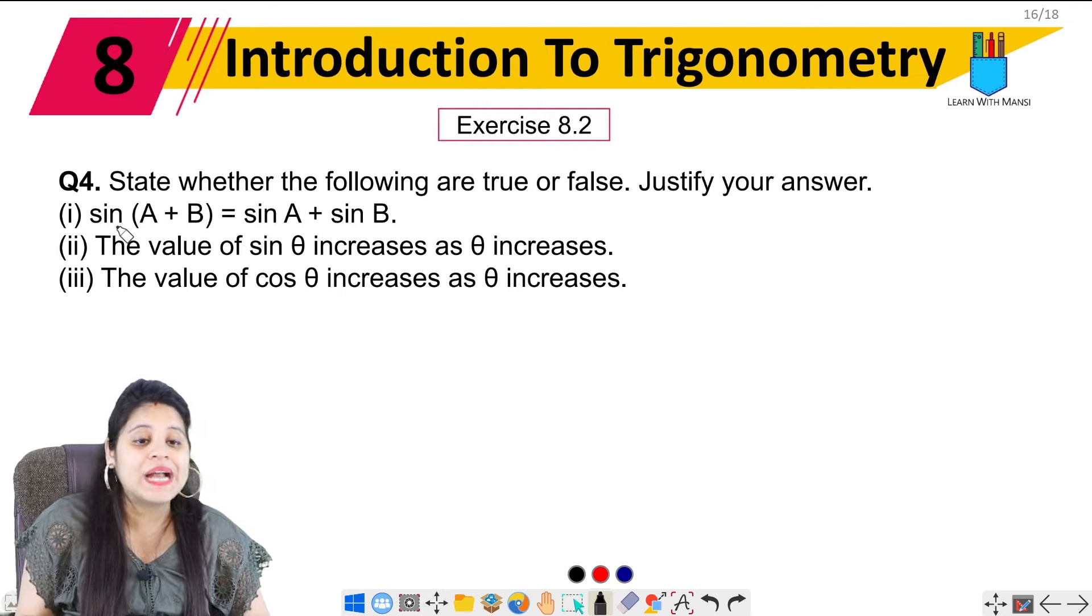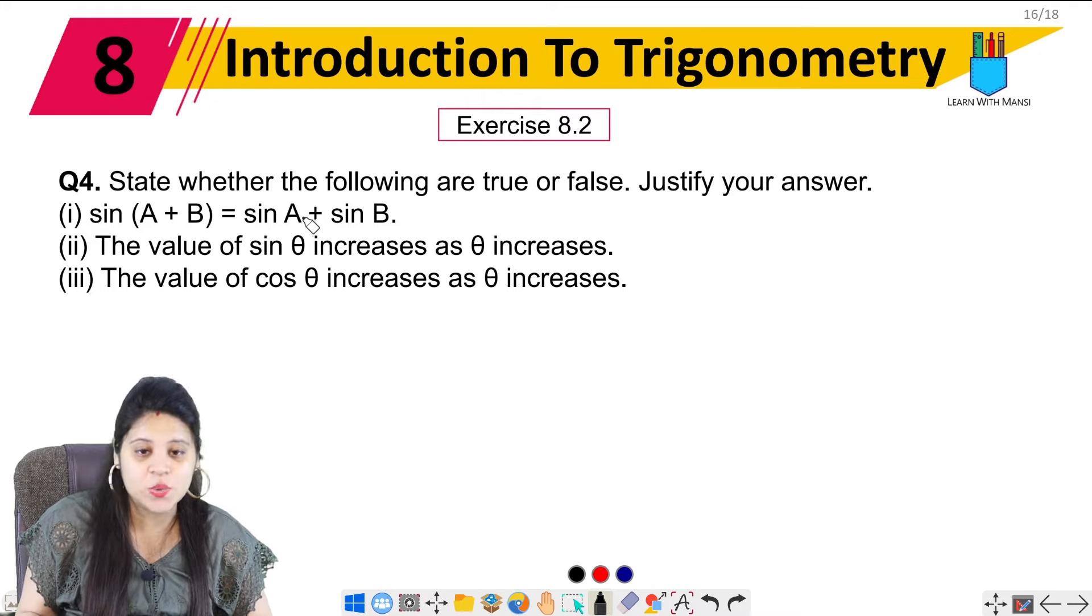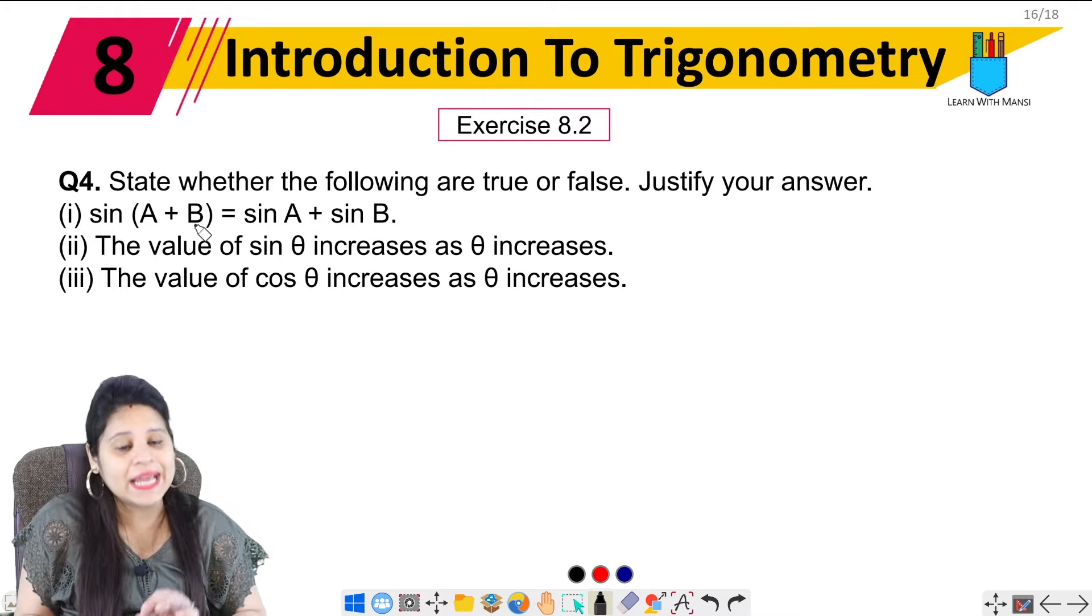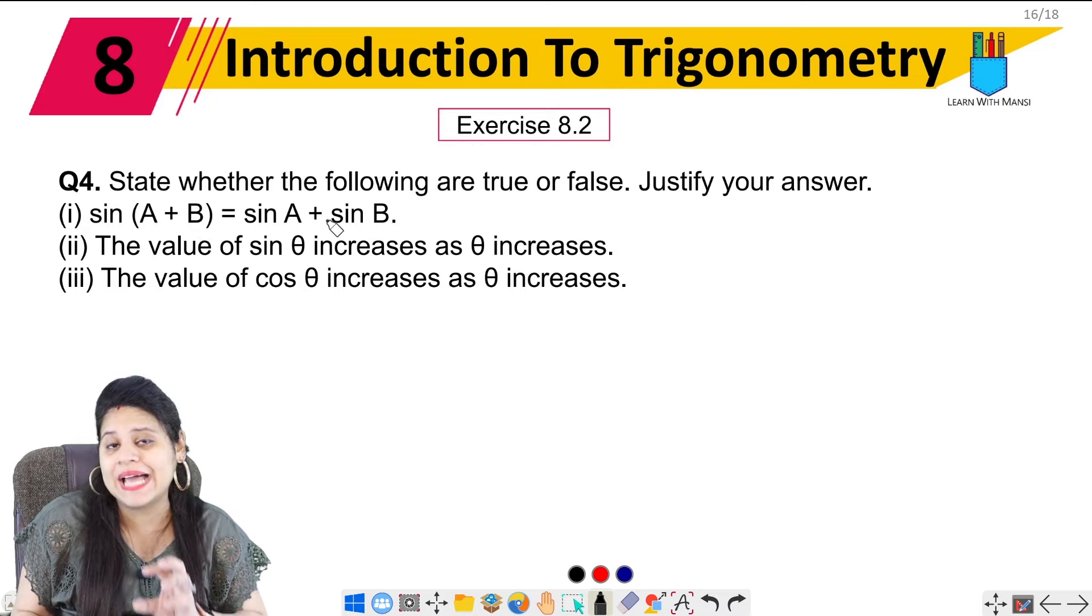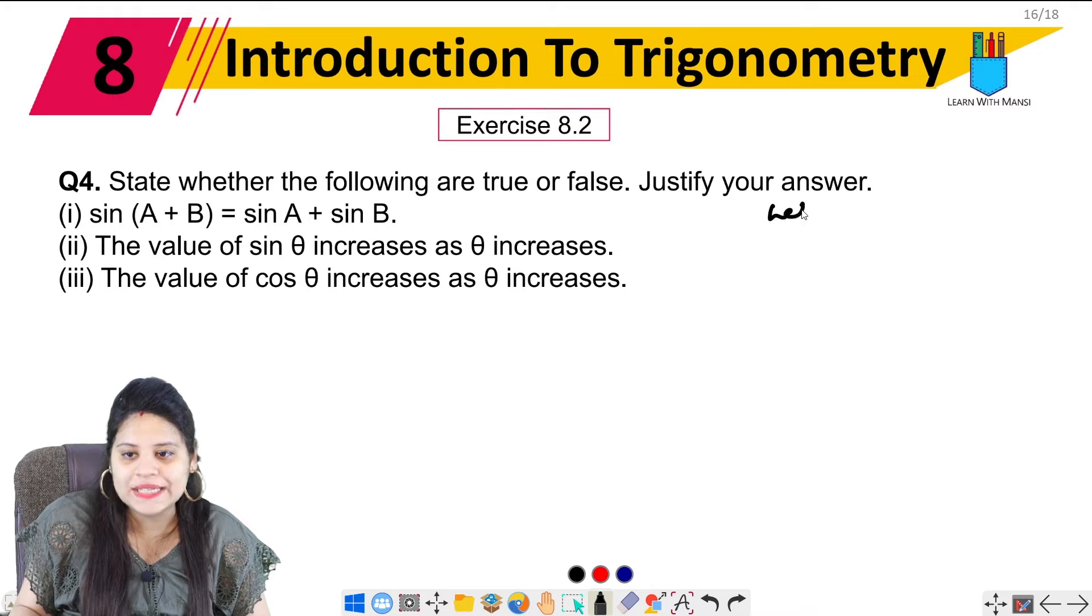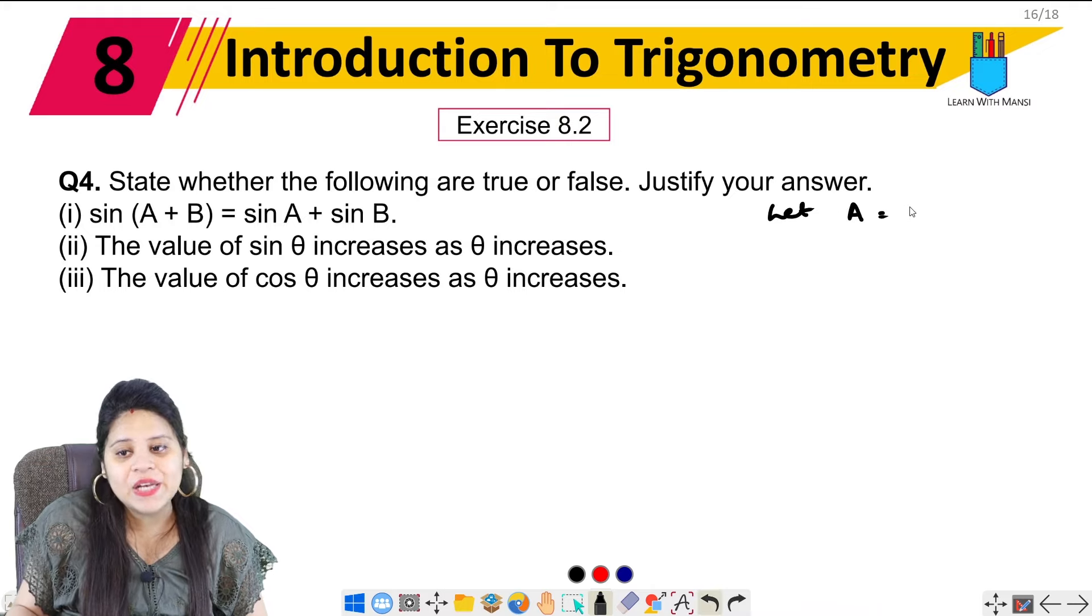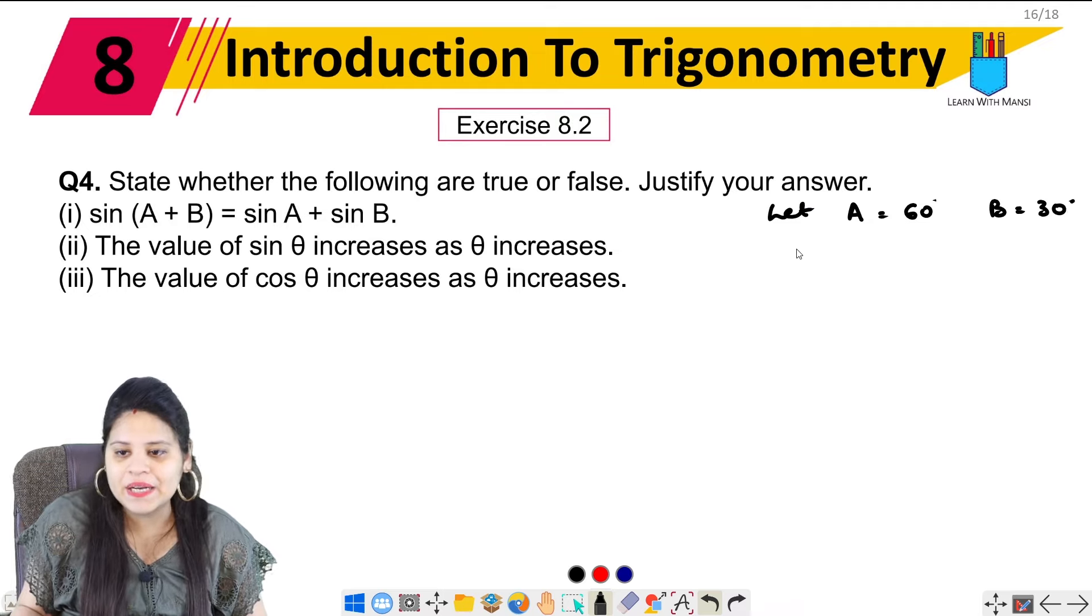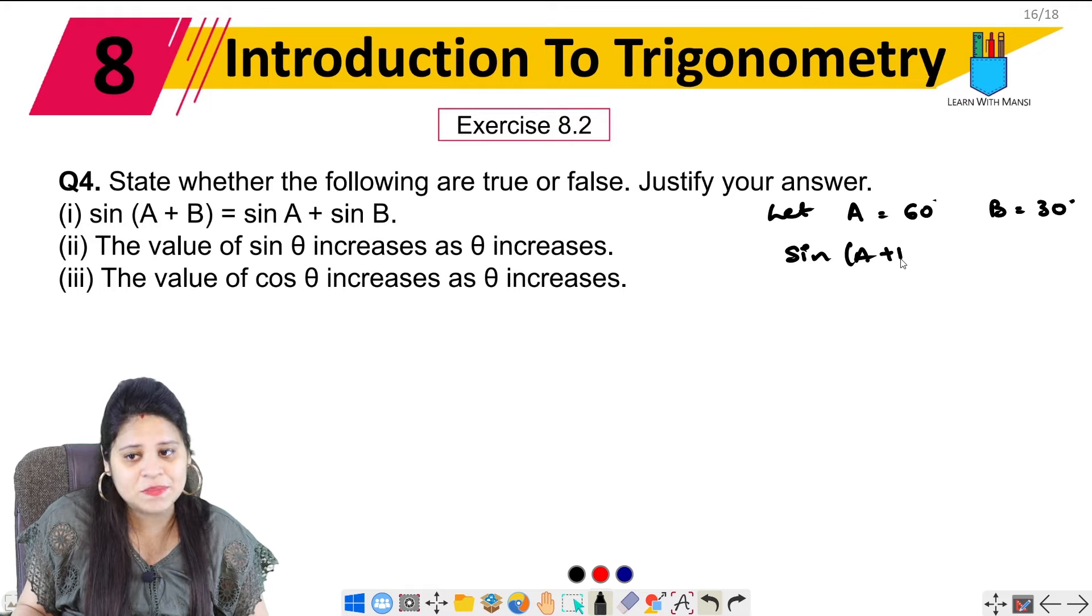The first part is sin(A + B) = sin A + sin B. Now they are saying that sin(A + B) will be equal to sin A + sin B. So let's take an example here. Let's take A value 60 degrees and B value 30 degrees. So now in this case, if we take sin(A + B)...